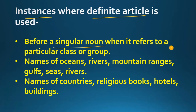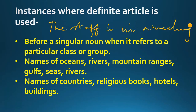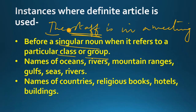Before a singular noun when it refers to a particular class or group — जब आप singular noun use कर रहे हैं जो कि एक class को represent करता है. For example, 'The staff is in a meeting.' Staff refers to a group of employees जो एक meeting में हैं. यहाँ पर staff एक singular noun है, but it represents a class or group of people, तो इससे पहले हमने 'the' use किया. ऐसे ही 'the committee is in a meeting' या 'the senate has decided something' — इन सब nouns से पहले हम 'the' use करते हैं.